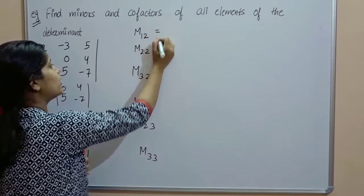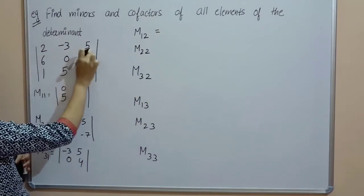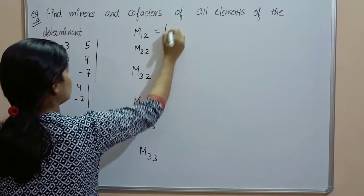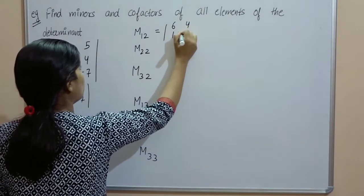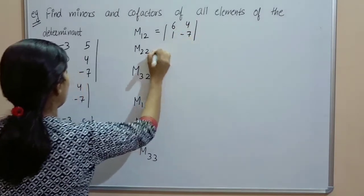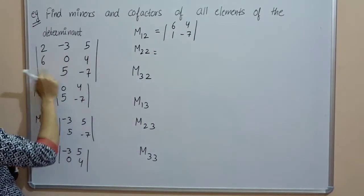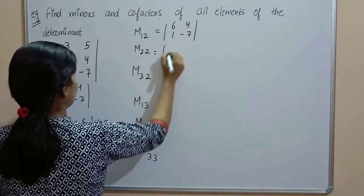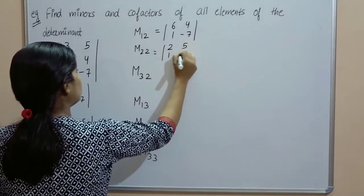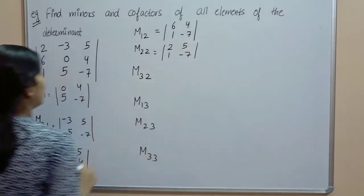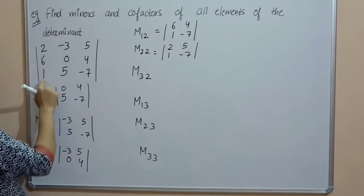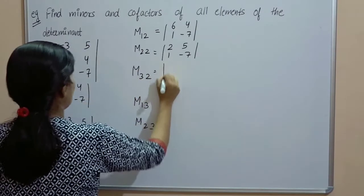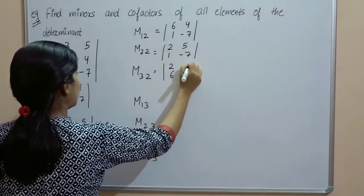M22: delete second row and second column; remaining elements are 2, 1, 5, −7. M32: delete third row and second column; remaining elements are 2, 6, 5, 4. M13: delete first row and third column; remaining elements are 6, 1, 0, 5. M23: delete second row and third column; remaining elements are 2, 1, −3, 5. M33: delete third row and third column; remaining elements are 2, 6, −3, 0.